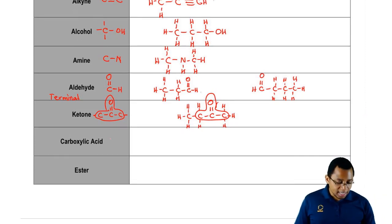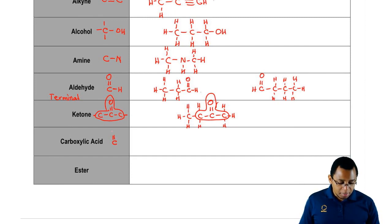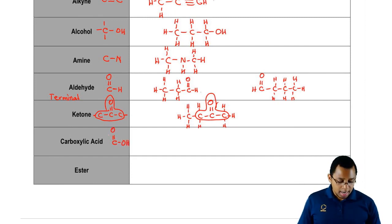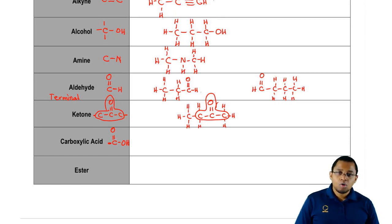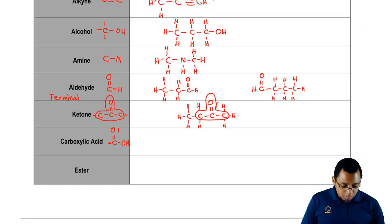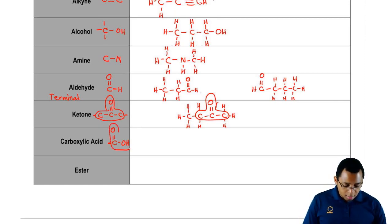A carboxylic acid is a carbon that's double bonded to an oxygen and then single bonded to an OH. That carbon will in turn be connected to maybe an H or maybe another carbon chain. But it's this portion that makes it a carboxylic acid.